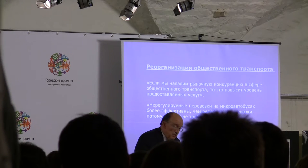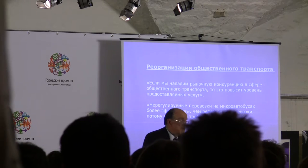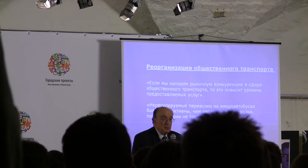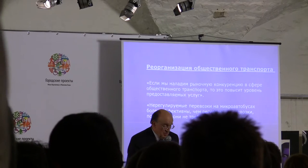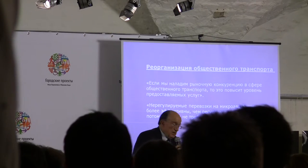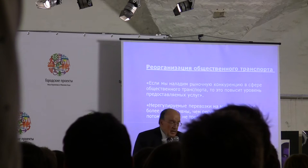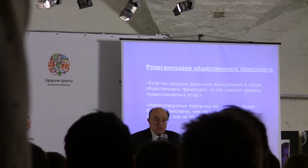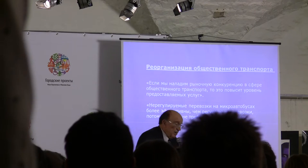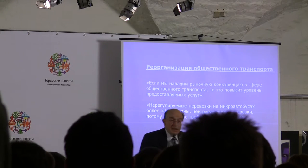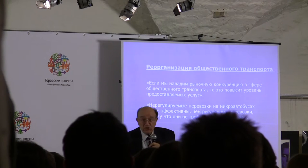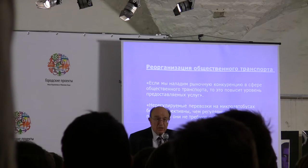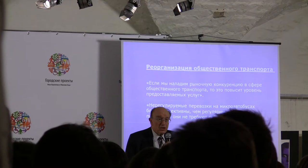What happened with Thatcher? They deregulated everything except London — they knew London would fall apart, so London remained unified. But the rest of Britain got totally destroyed as a system and they lost over 30% of passengers from public transport, while at the same time increasing investments in motorways. I was shocked to hear that some of your cities, or perhaps your laws, allow uncontrolled, uncoordinated competition between transit companies.